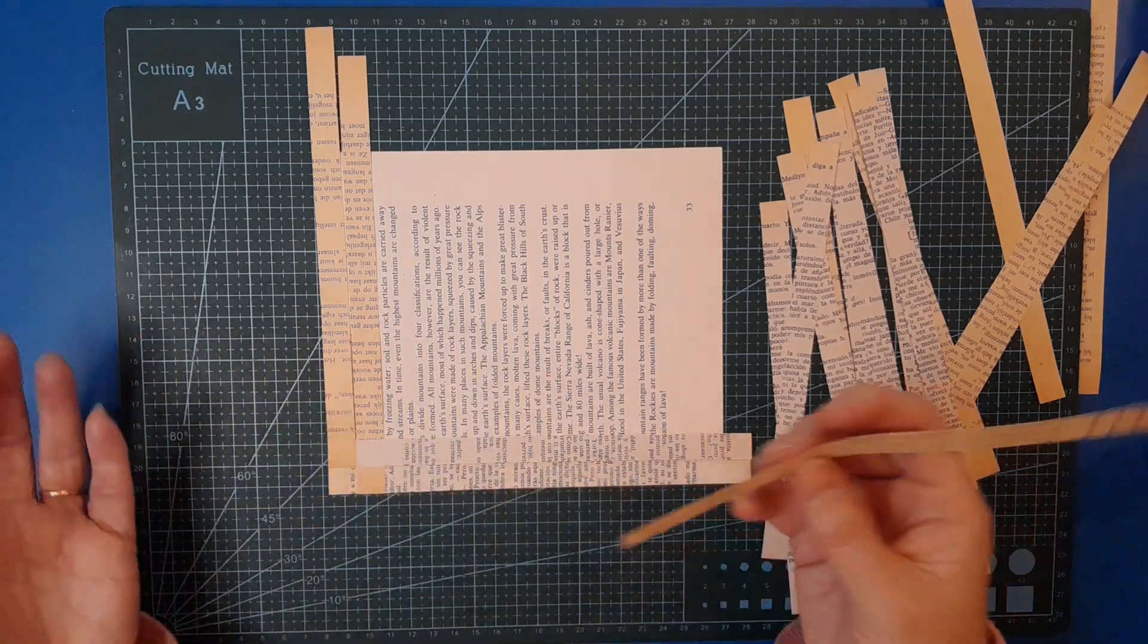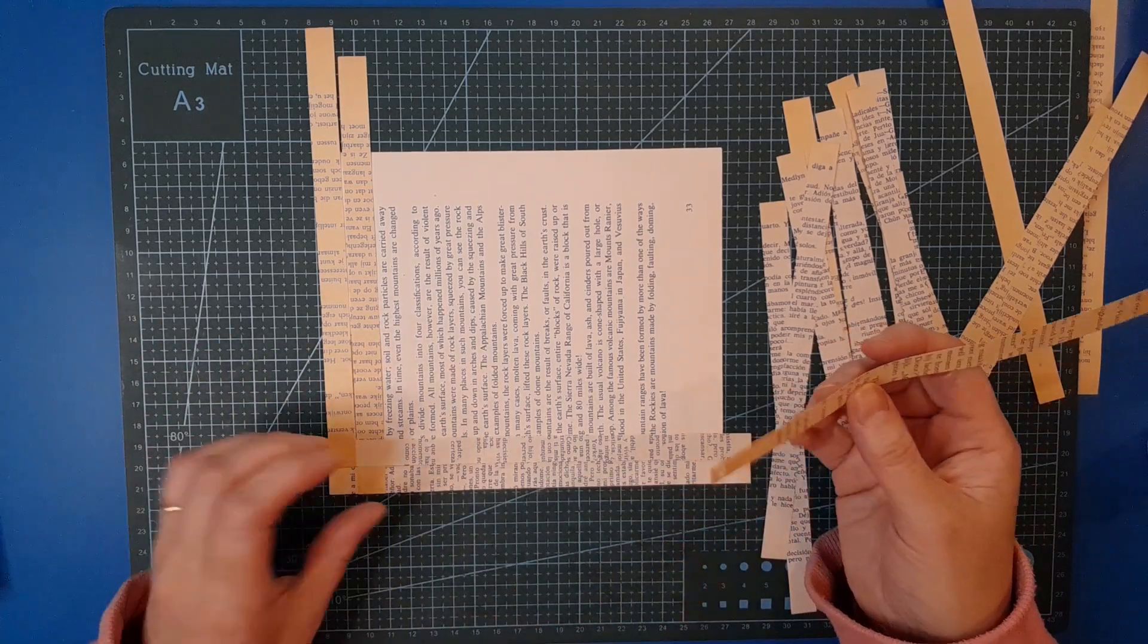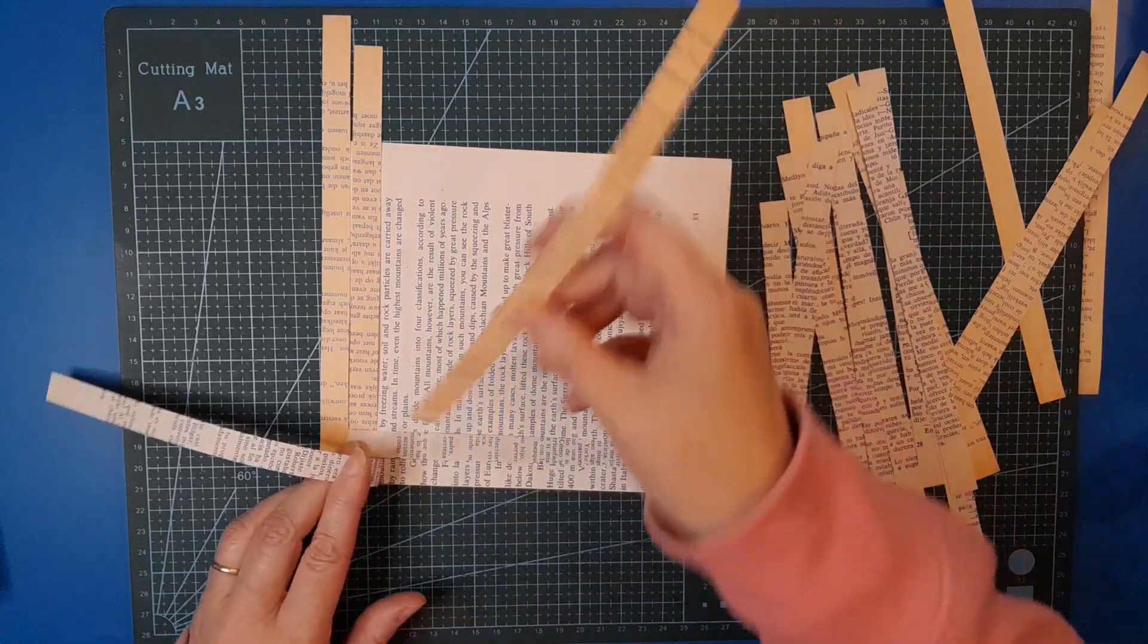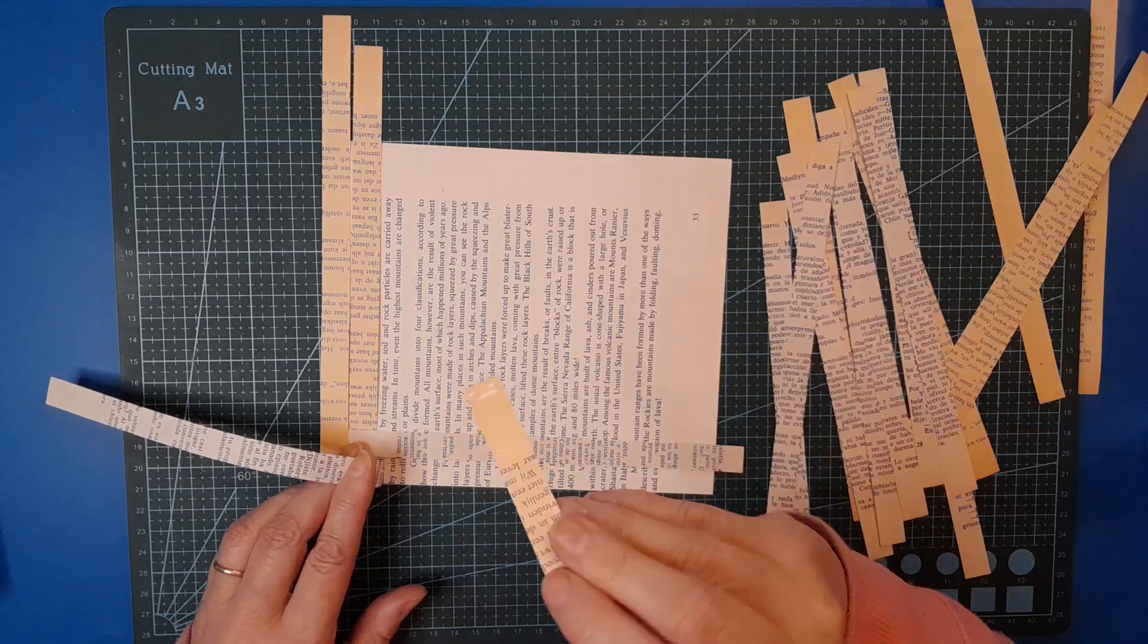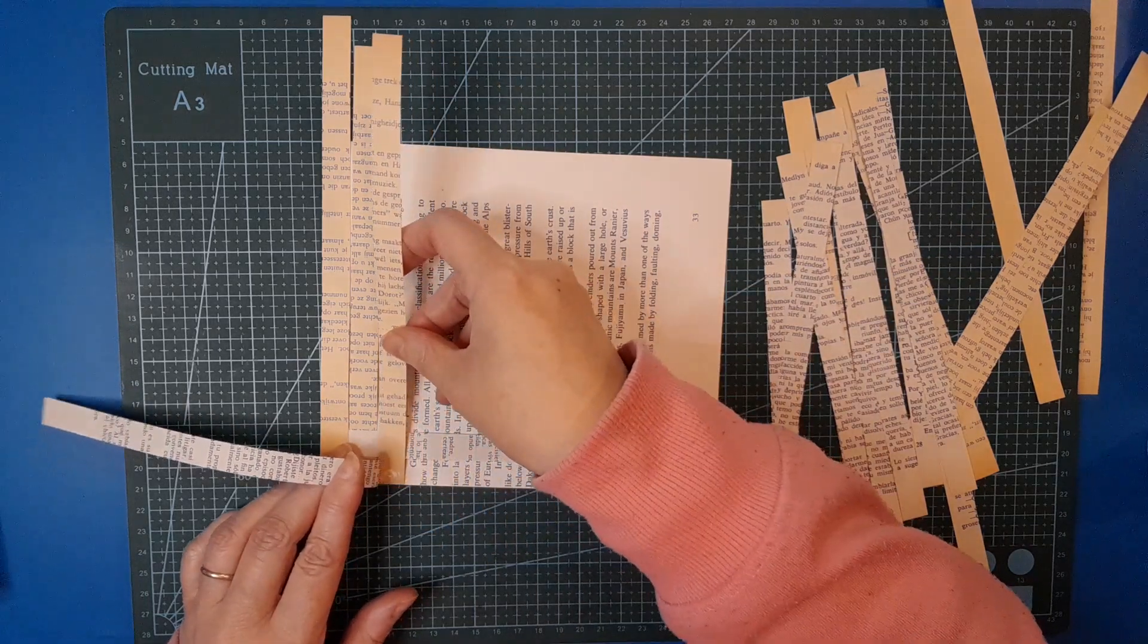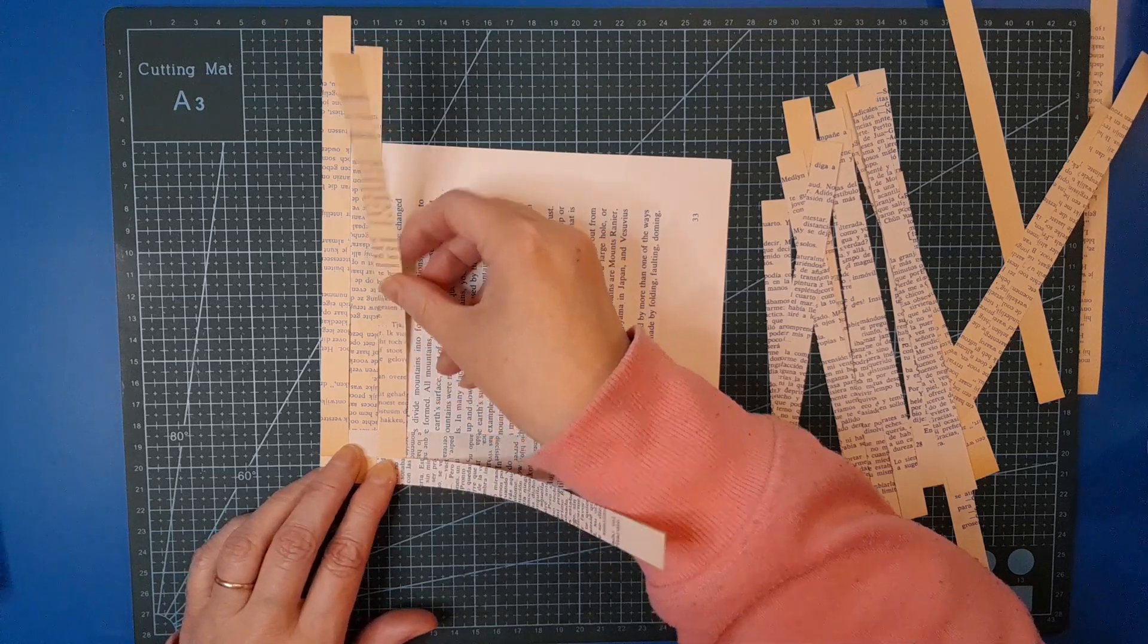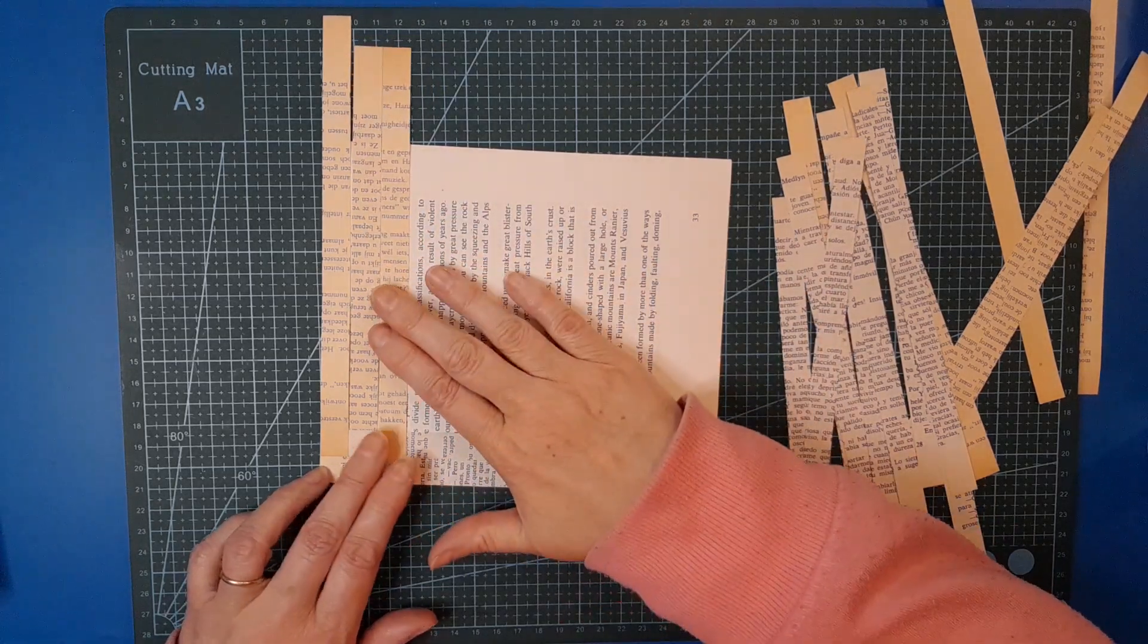This one is going to go under this first strip, so I'm going to lift that up. I put glue on the top and bottom of this next book page strip, and then I'm going to line it up so it's going to glue to the base and to the strip all at the same time.